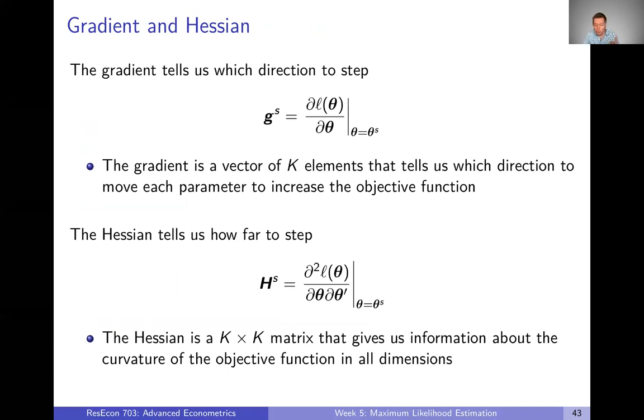So we're going to use two statistical objects to help us with this, the gradient and the Hessian. The gradient is the vector of K elements. It's going to tell us which direction to move each parameter in. It's just the derivative of our objective function with respect to each parameter. That's basically going to tell us, does the first parameter need to get bigger or smaller? Does the second parameter need to get bigger or smaller? It's going to tell us which way to move things in.